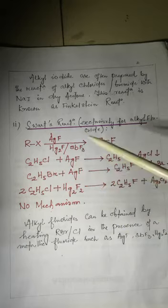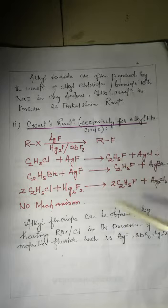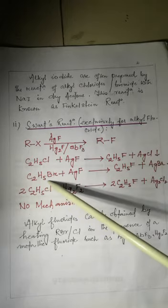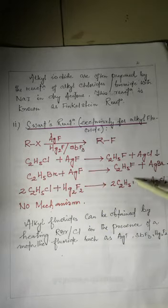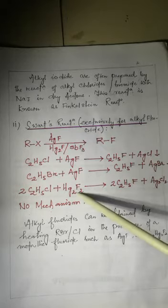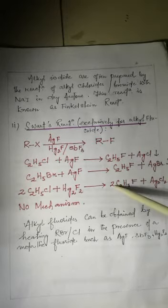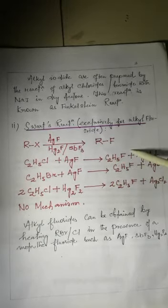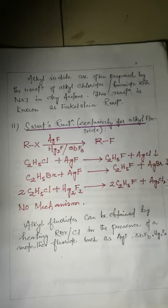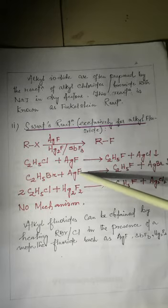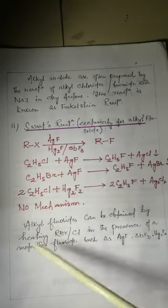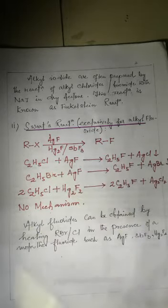For example, ethyl chloride reacts with silver fluoride to give ethyl fluoride and silver chloride as a precipitate. Similarly, ethyl bromide reacts with silver fluoride to give ethyl fluoride and silver bromide. The first product is the same in both cases, but the side product differs depending on the starting halide.